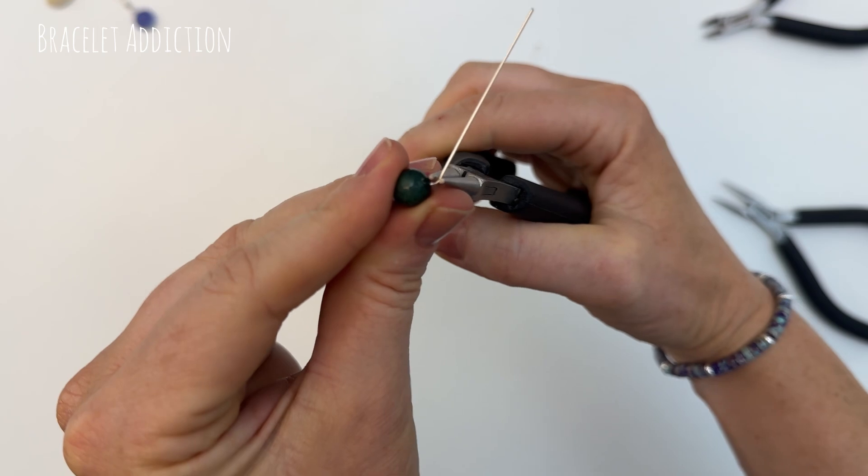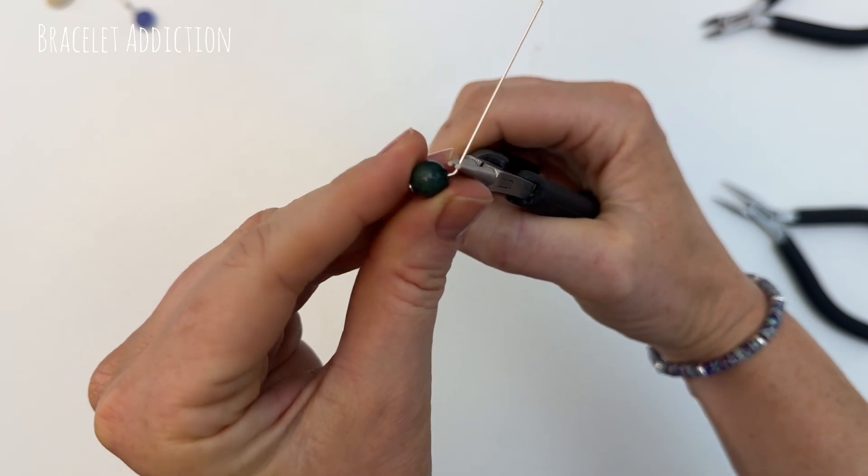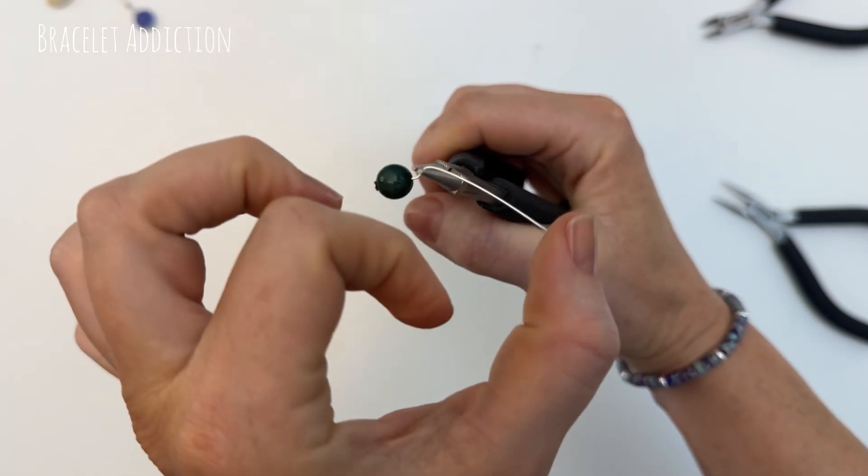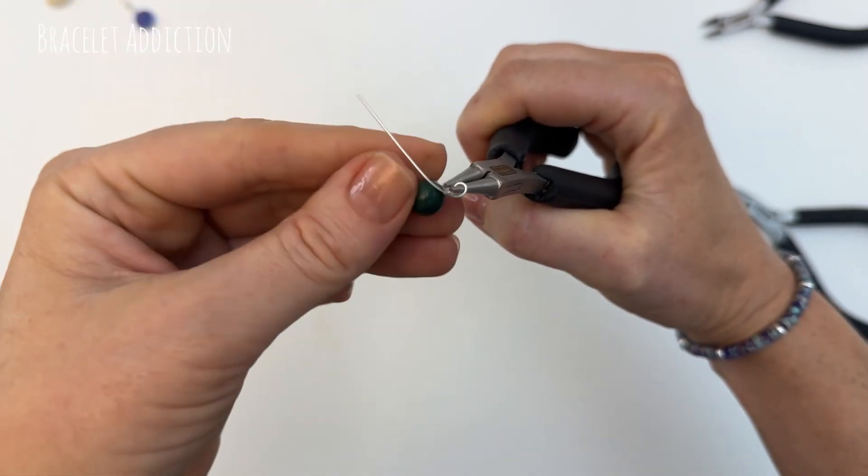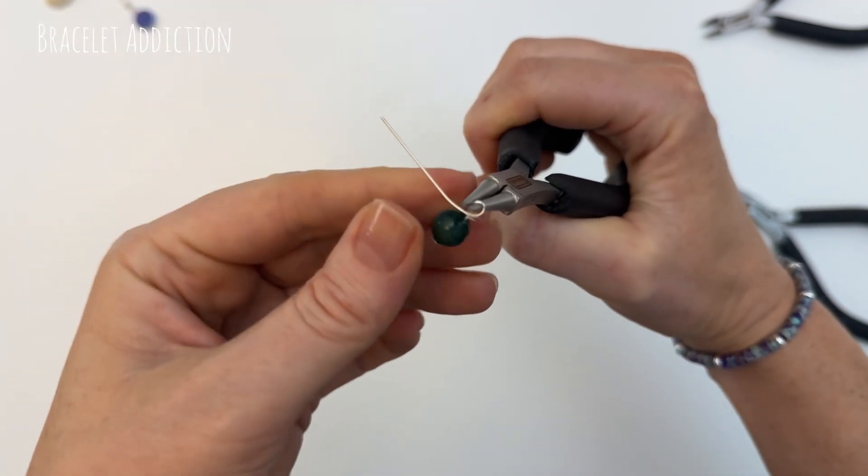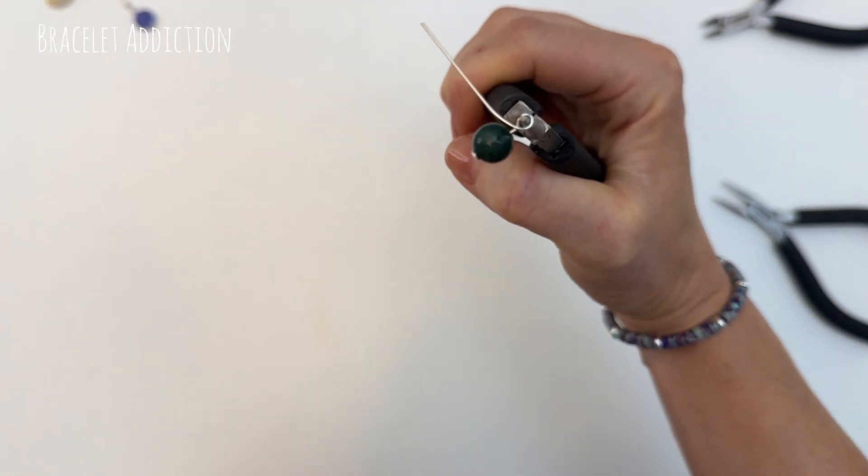Now adjusting to grab just above the bend with our pliers, bringing that wire around the round nose pliers and across the other wire. So you should have a nice little loop there.